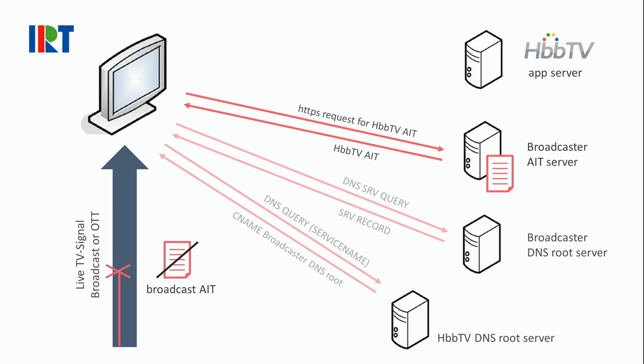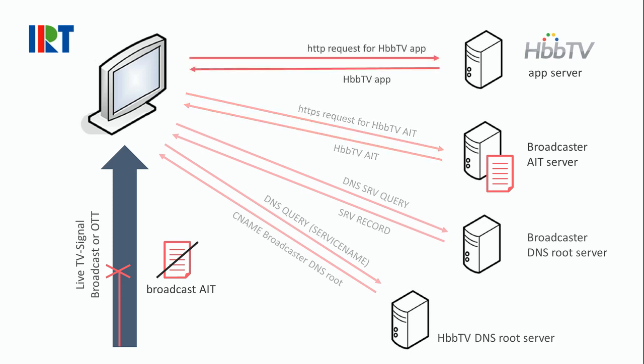And based on the information in this AIT, the HbbTV receiver can finally make requests to the HbbTV application server to load and launch the regular HbbTV application, which will then display the red button message on the TV screen.